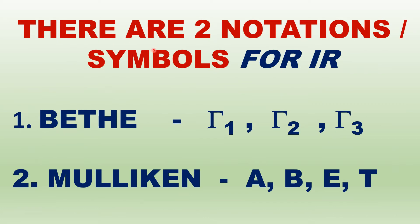There are two notations or symbols used for representing irreducible representations. These are the Bethe notation — where Gamma 1, Gamma 2, Gamma 3 are used — and the Mulligan notation, which we will further explore.